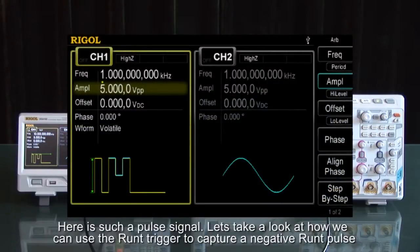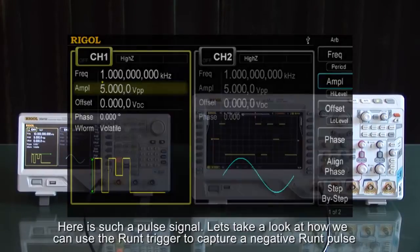Here is such a Runt pulse signal. Let's take a look at how we can use the Runt trigger to capture a negative Runt pulse.